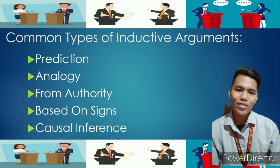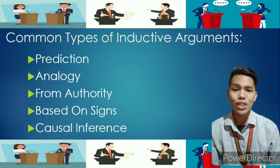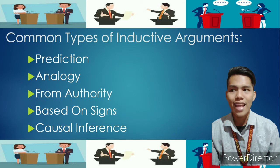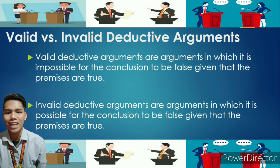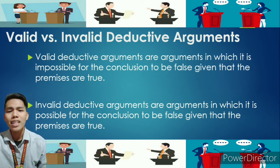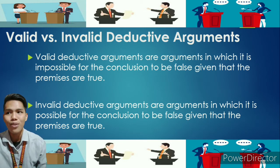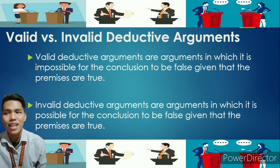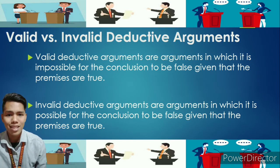The common types of inductive arguments are: prediction, analogy, from authority, based on signs, and causal inference. Identifying valid and invalid deductive arguments: valid deductive arguments are arguments in which it is impossible for the conclusion to be false given that the premises are true. Invalid deductive arguments, contrary to valid ones, are arguments in which it is possible for the conclusion to be false given that the premises are true.